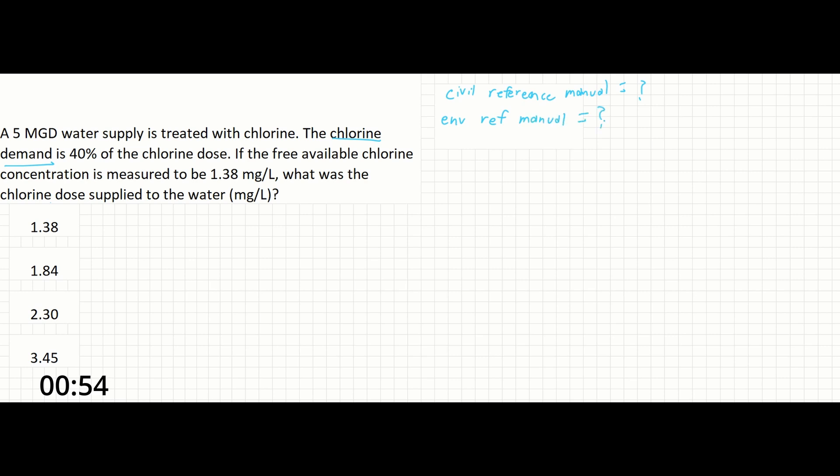Thankfully, it's not hard. Chlorine demand is the amount of chlorine needed to react with substances in the water. The chlorine dose is simply the amount of chlorine supplied to the water. Therefore, the free available chlorine is the amount left over after subtracting the demand from the dose.